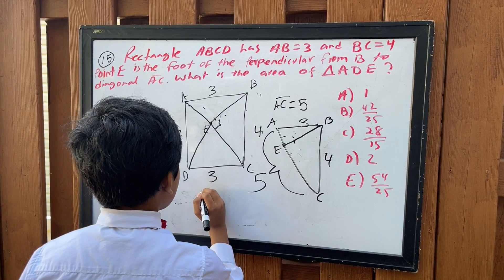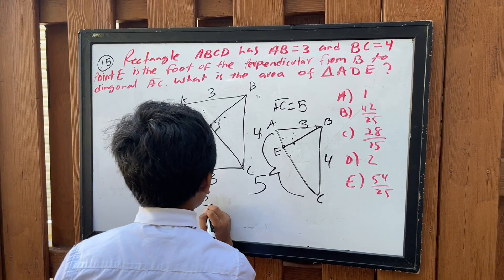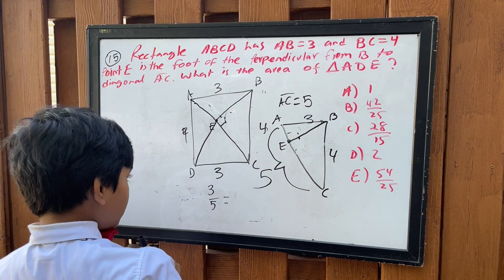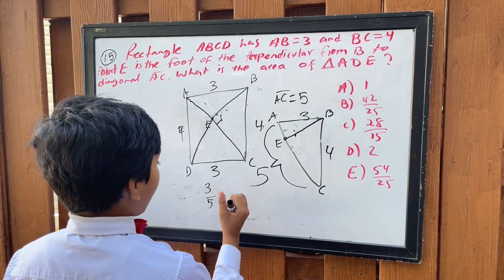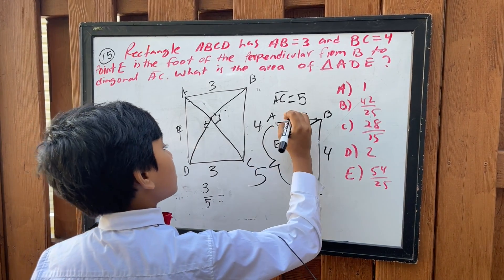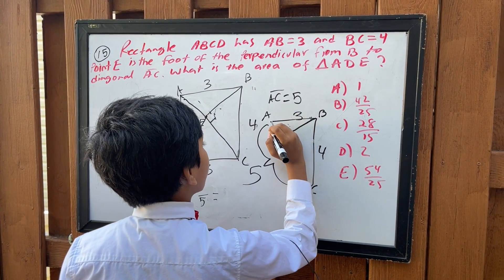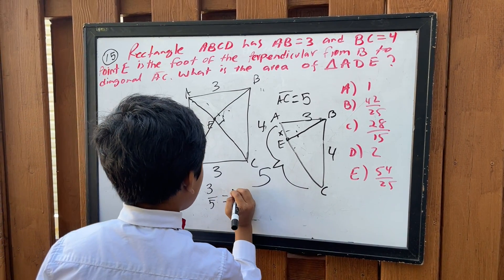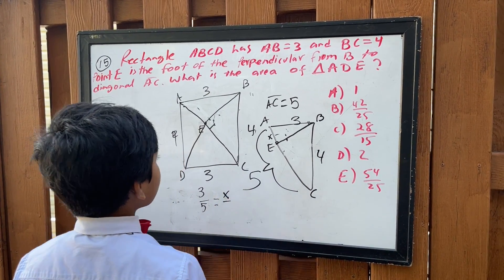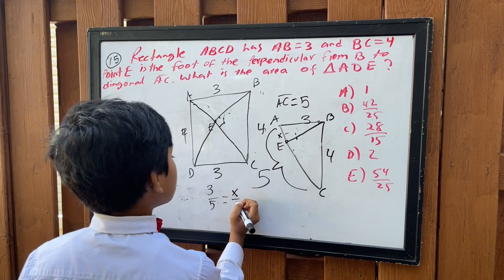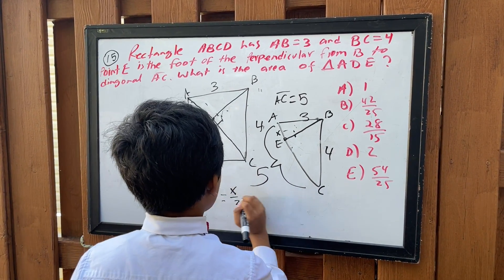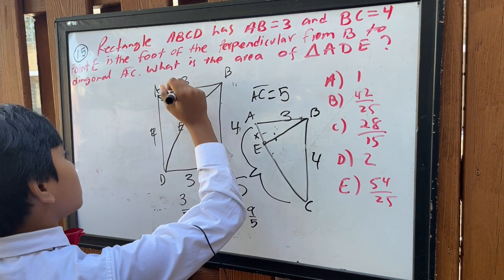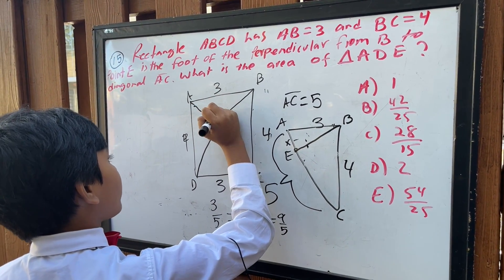So three over five, we'll say, we'll call this little length over here X. And it's going to be like X to, this is the small side, so three. So this gives us X is equal to nine-fifths. So this is nine over five, AE.